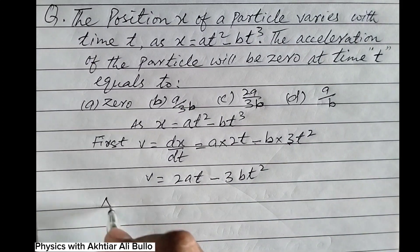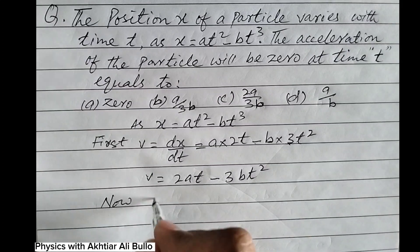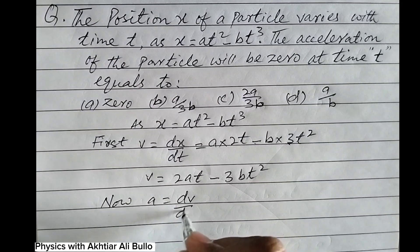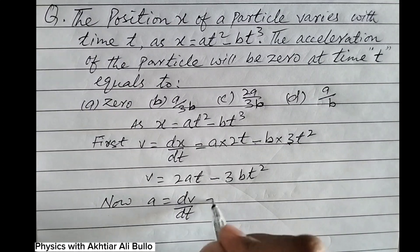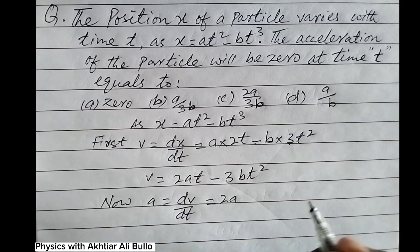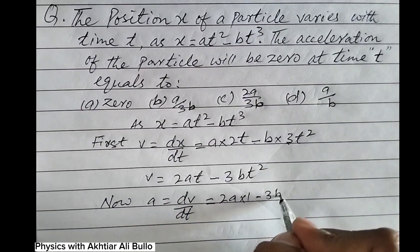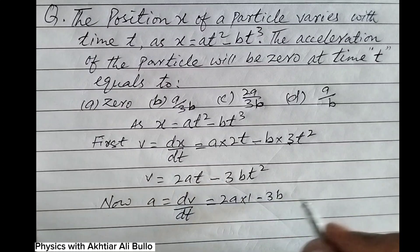Now acceleration a = dv/dt. The derivative of t is 1, and the derivative of t² is 2t.